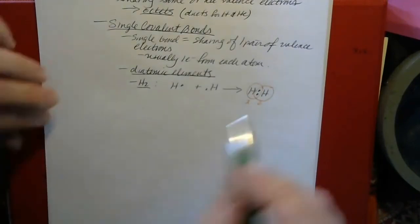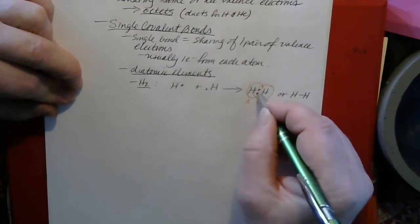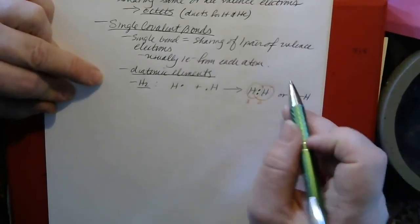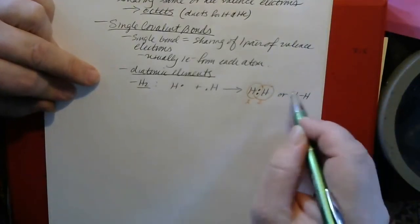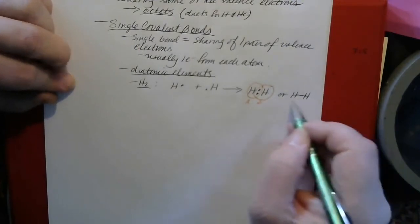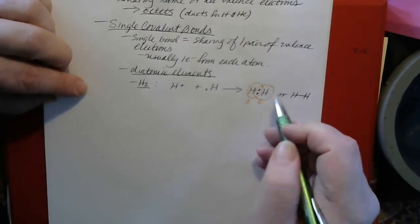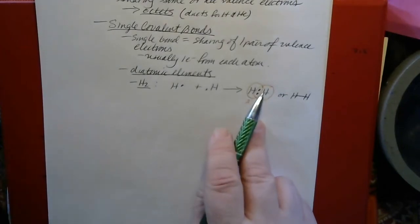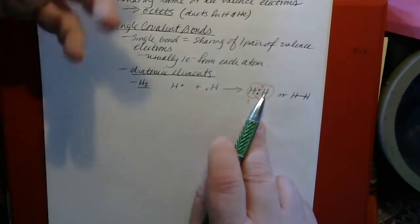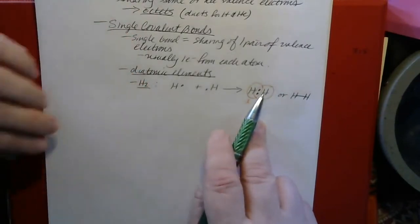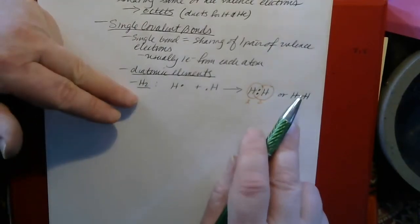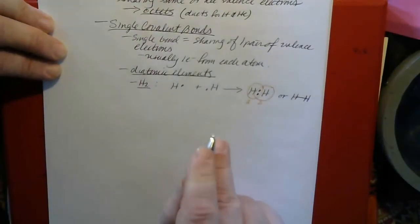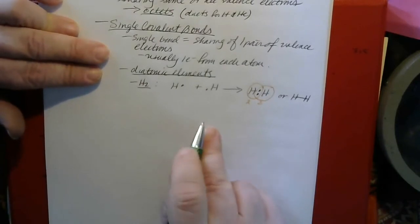The two electrons between the atoms constitute the covalent bond — two electrons being shared is one covalent bond, or a single covalent bond. You can also write a Lewis structure with a straight line between the two atoms representing the bond. Which way you write it depends on what you want to emphasize: dots representing the bond emphasize the electrons and their locations, while a straight line emphasizes that there's one bond. Either way is correct.